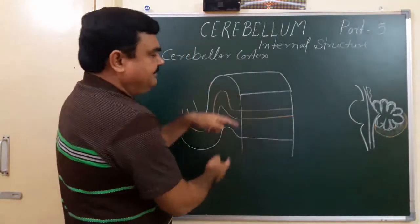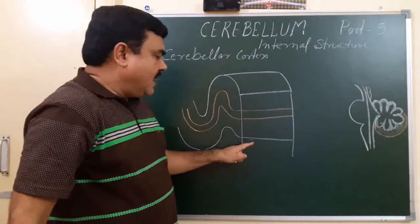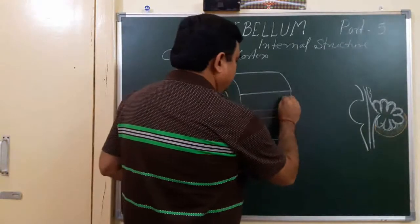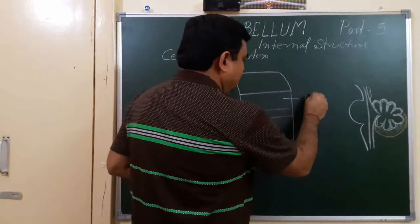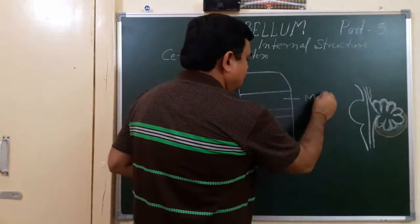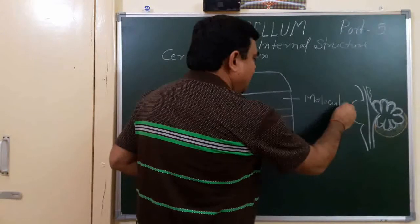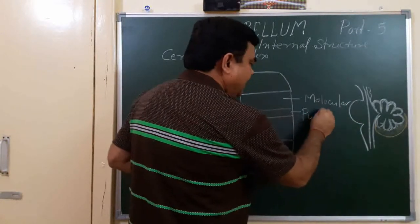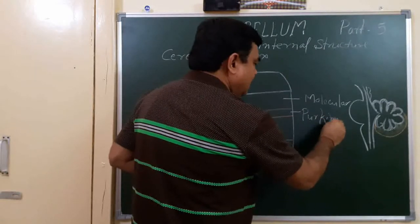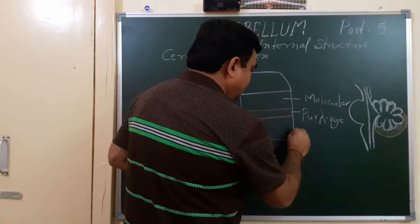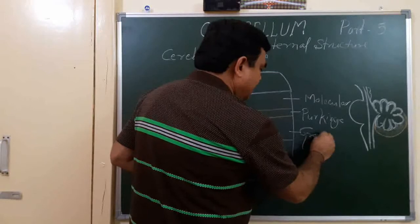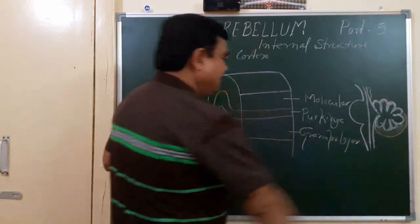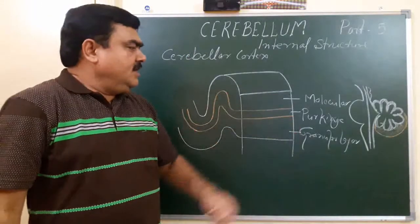This grey matter is divided into 3 layers: the molecular layer, the Purkinje layer, and the granular layer. So these are the 3 layers of the cerebellar cortex.